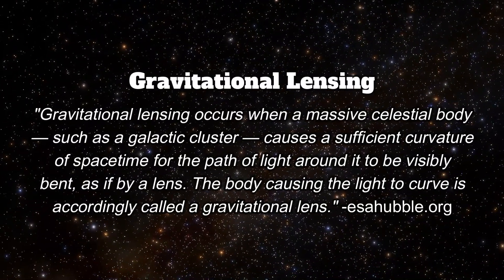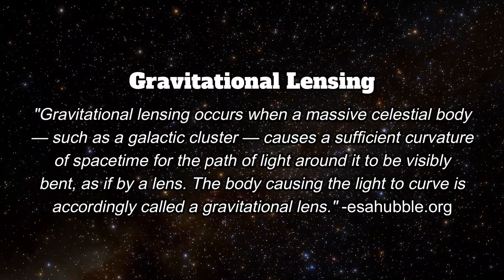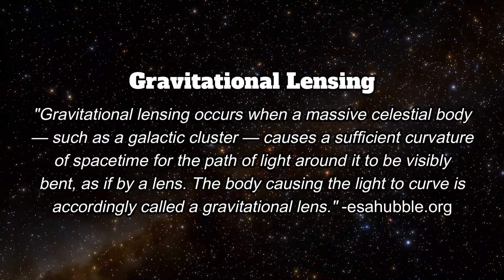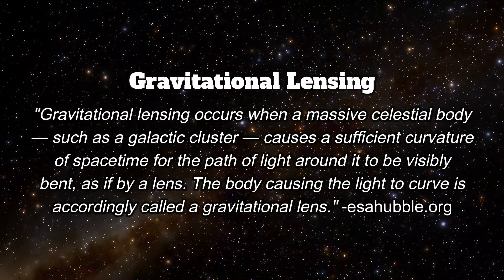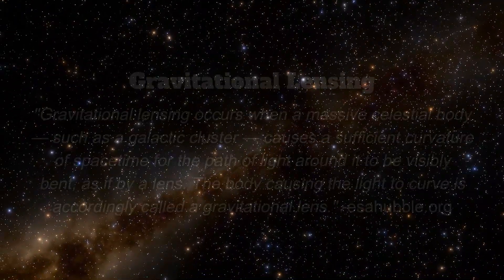It is through gravitational lensing that astronomers are able to map out how much dark matter is present in each galaxy, galactic cluster, and supercluster in the cosmos, due to dark matter accounting for almost six times more mass in the universe than baryonic matter.